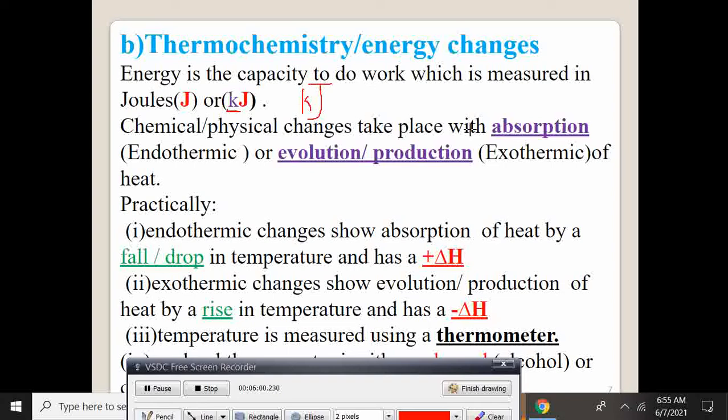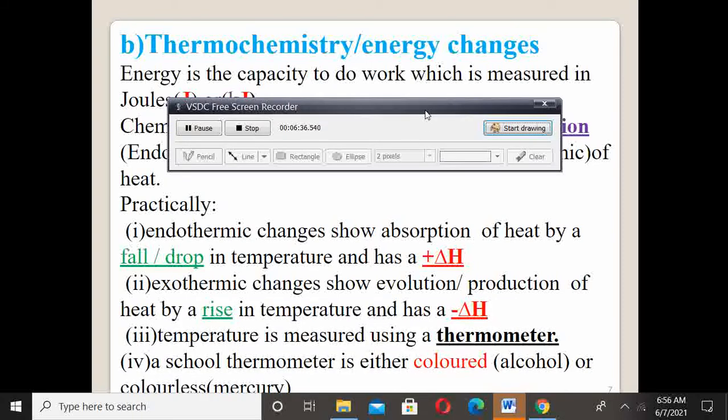So, the changes take place with either the absorption, endothermic, or the evolution of heat, exothermic. Endothermic changes show an absorption of heat by a fall in temperature or a drop, and exothermic changes show evolution by a rising temperature. So, when temperatures drop, our enthalpy change is supposed to be positive, and when temperature rise, it is negative.